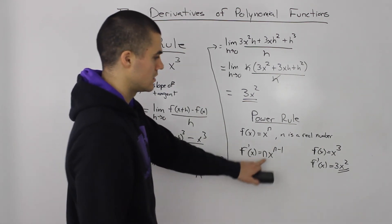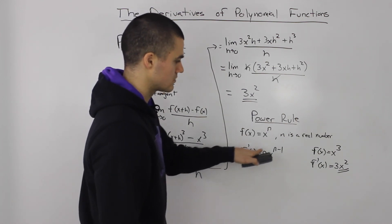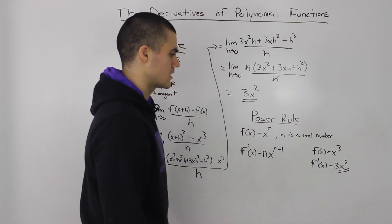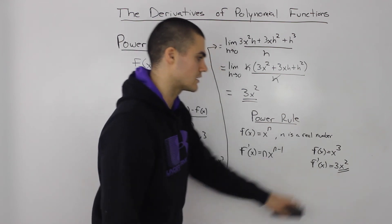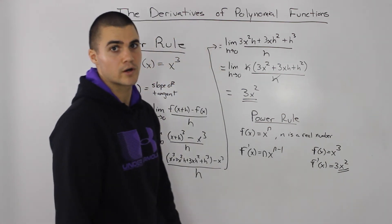Let's do a review: you just bring the n down and then subtract 1 from the exponent to get the derivative in a much quicker way.